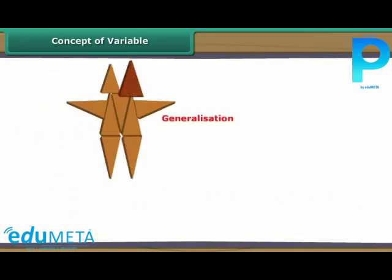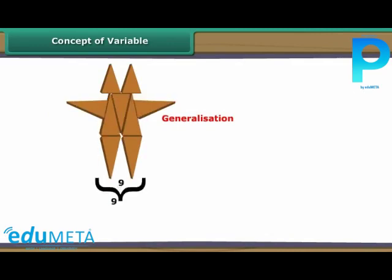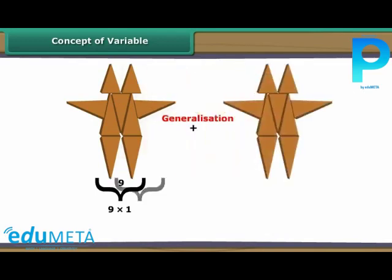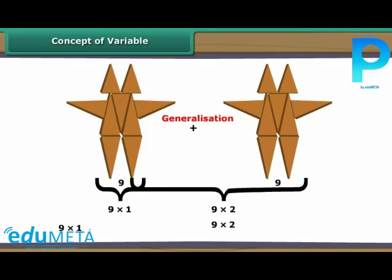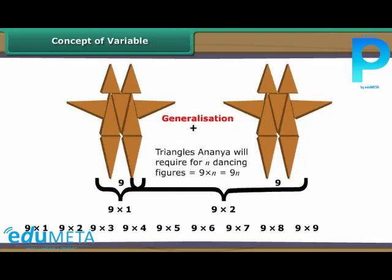The triangles Ananya uses in a single dancing figure are fixed. However, the total number of triangles used varies depending upon the number of dancing figures she makes. We can therefore generalize by saying: if Ananya makes n dancing figures, she will require 9 into n triangles.